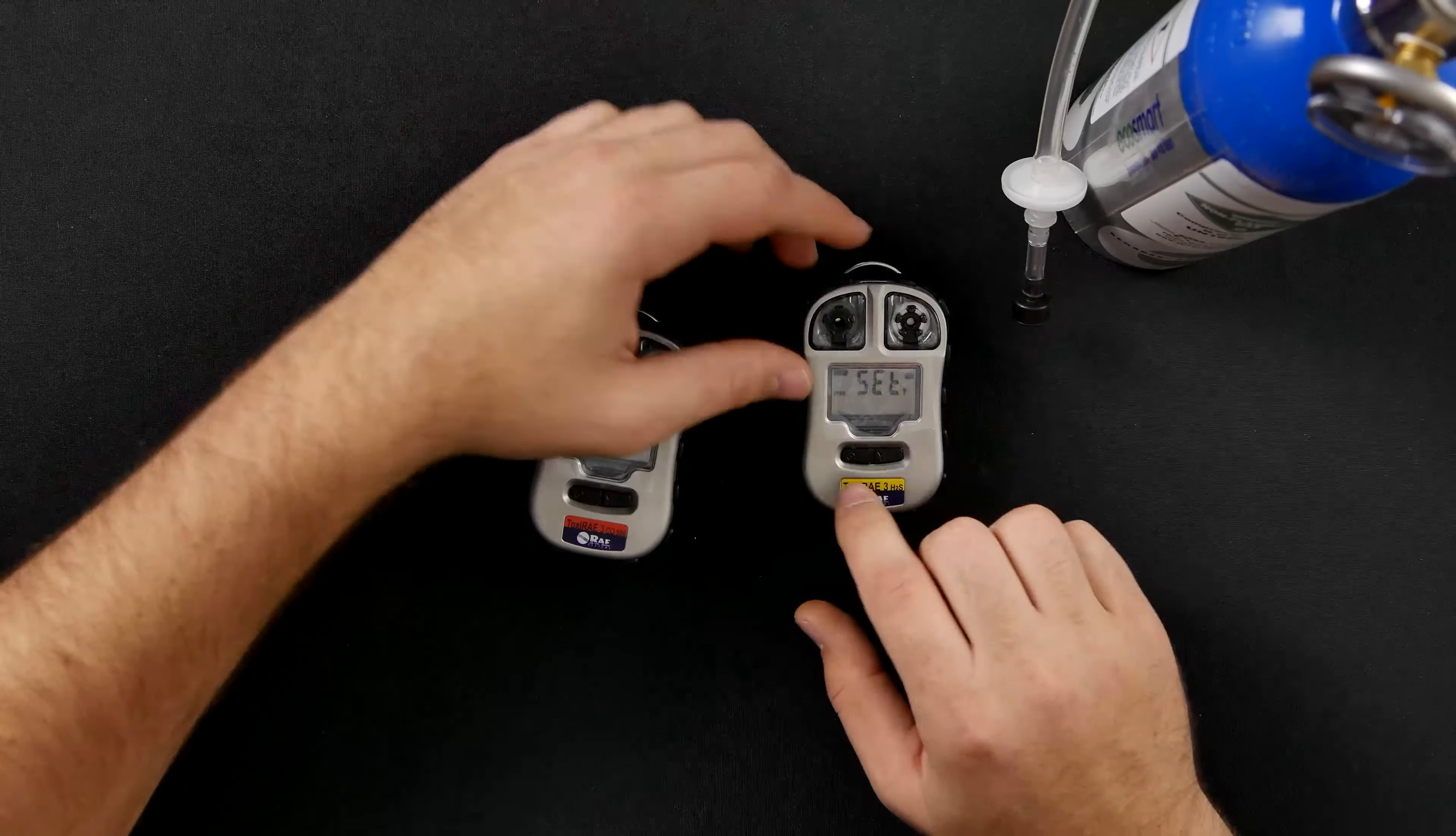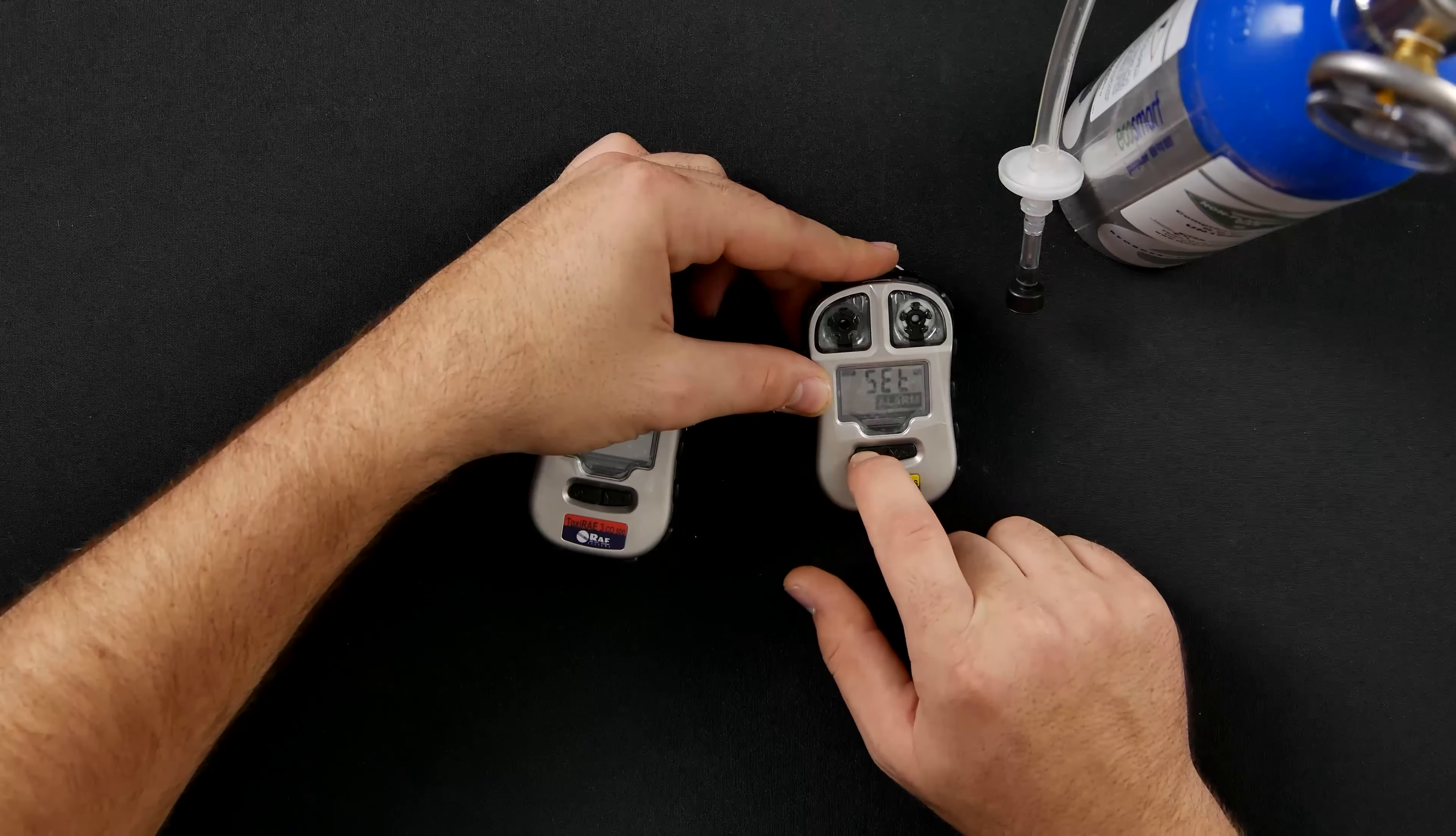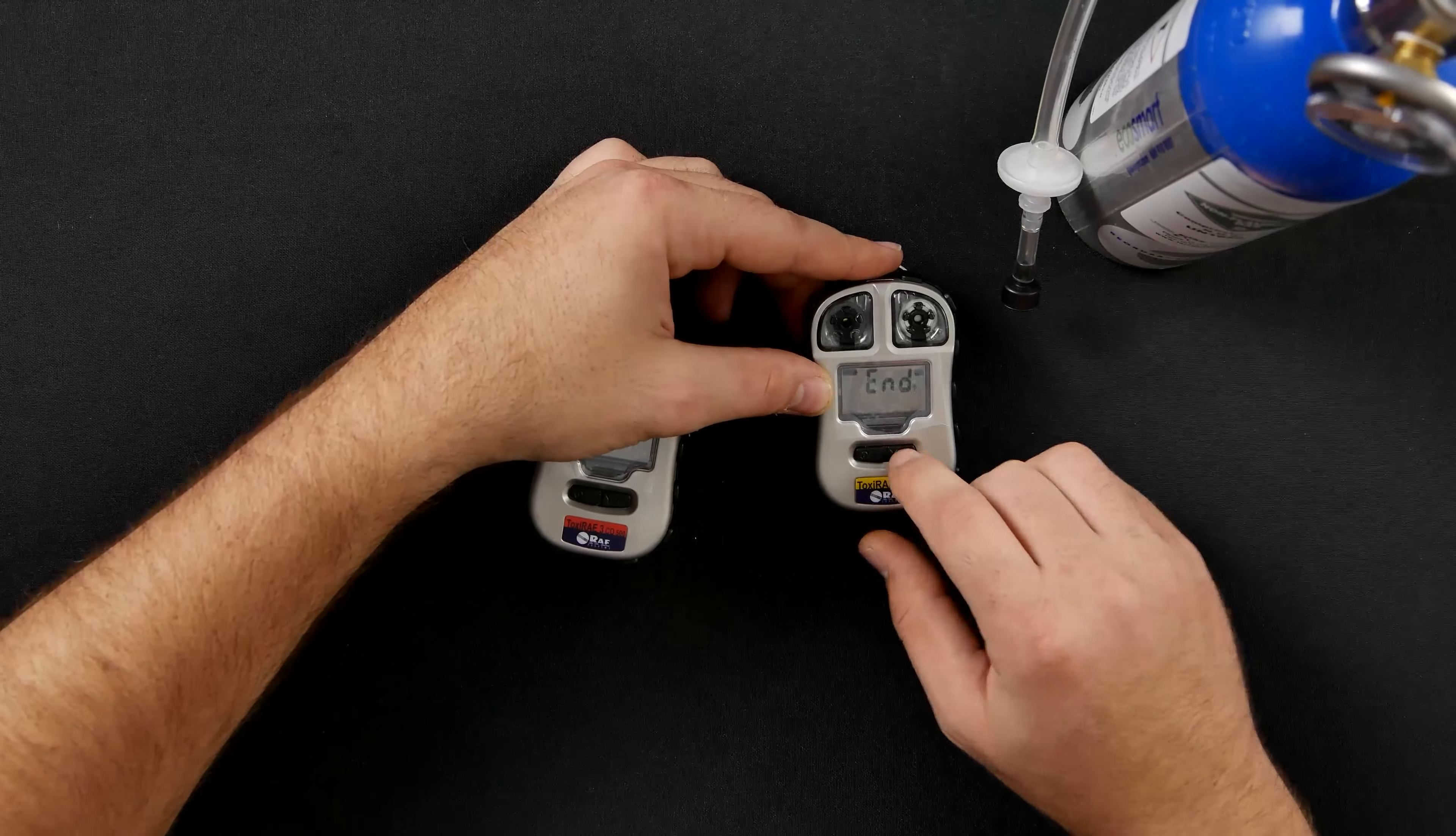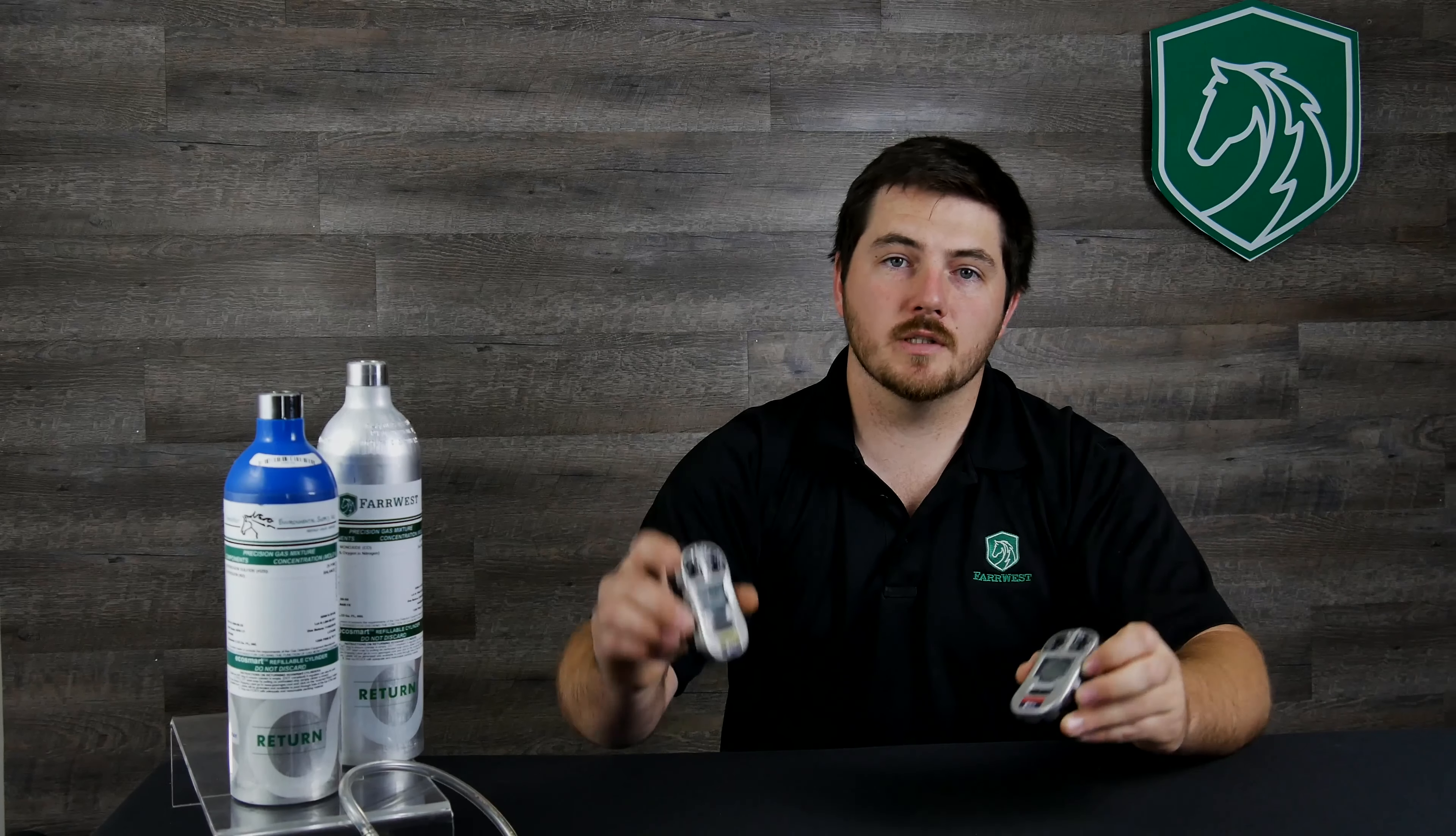To exit out of the screen, you may select the mode button to scroll over to the end button. When at the end button, select the Y plus button. You are back in normal reading mode. That completes your fresh air and SPAN calibration on your Toxiray 3 CO and H2S meter.